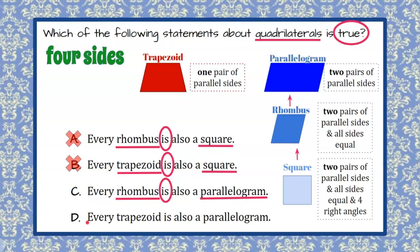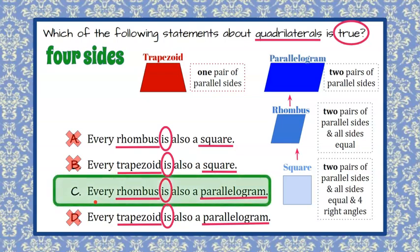But let's go on and look at choice D to make sure we can rule it out and that we've done it correctly. In D, every trapezoid is also a parallelogram. Well, trapezoid is over here because it only has one pair of parallel sides, and a parallelogram must have two. So therefore, a trapezoid is not a parallelogram, and we were correct. The correct answer is C.